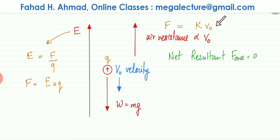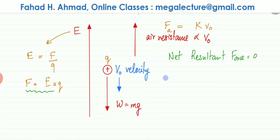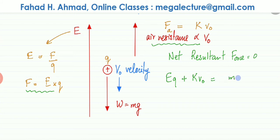Setting the upward and downward forces equal: the electric force EQ acts upward, the air resistance KV₀ also acts upward, and the downward force is mass times gravity (Mg). So the force balance equation is: EQ + KV₀ = Mg.